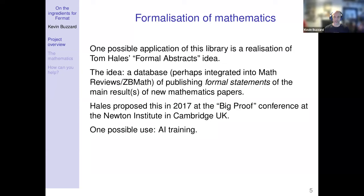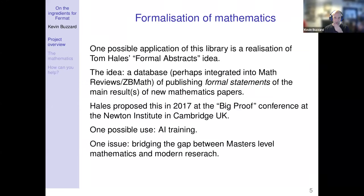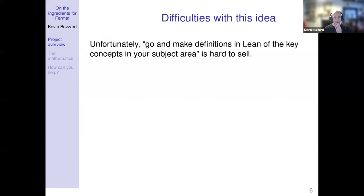One possible use for such a database would be training AI to be good at mathematics. The problem we face is that we have this library with a lot of basic group rings, fields, topological spaces, and even elliptic curves and modular forms. But modern research in some areas is a long way from those concepts — what's missing is a lot more definitions if we want to talk about what modern number theorists and algebraic geometers are actually doing in 2024.